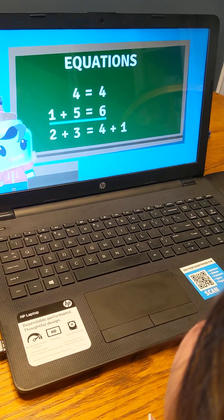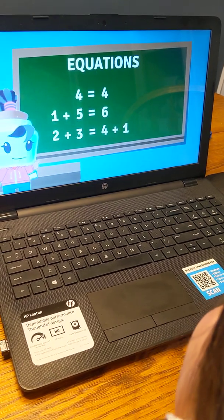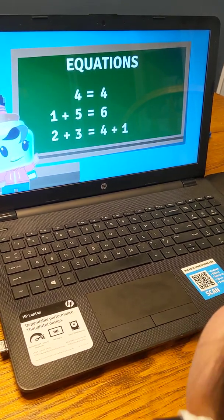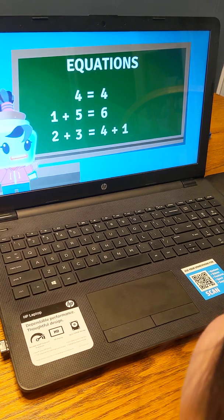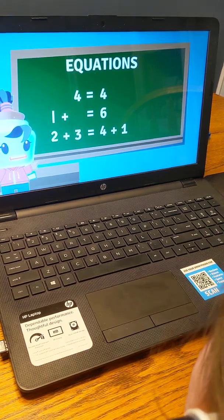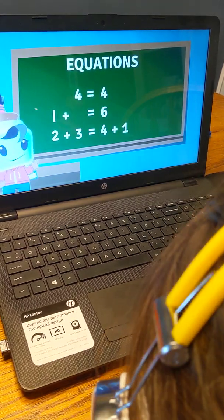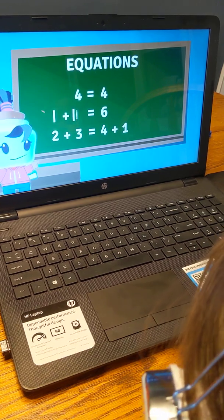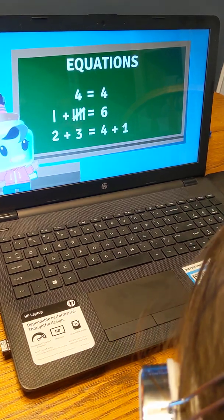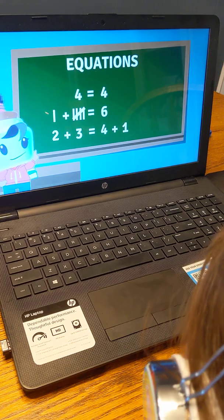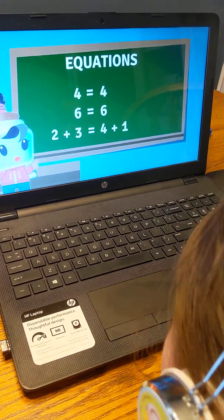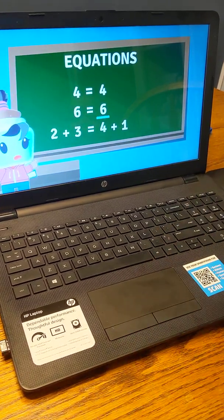1 plus 5 equals 6 is an equation because if 1 plus 5 is solved—1 plus 1, 2, 3, 4, 5—the answer is 6, which is the same as the other side of the equal sign.